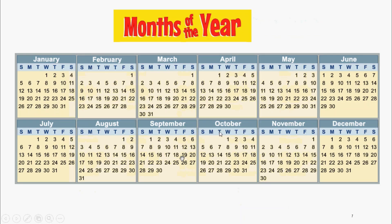Months of the Year: January, February, March, April, May, June, July, August, September, October, November, December.